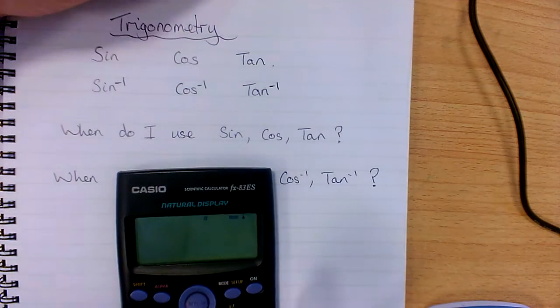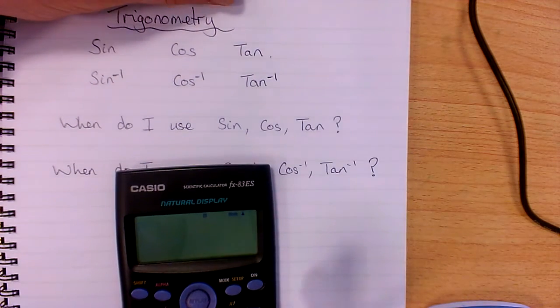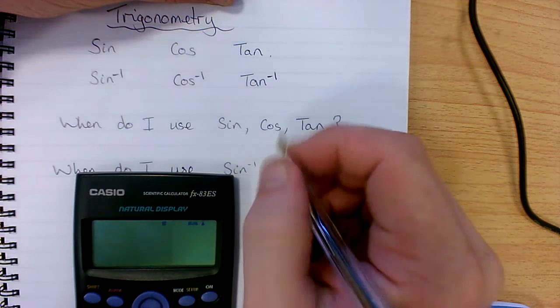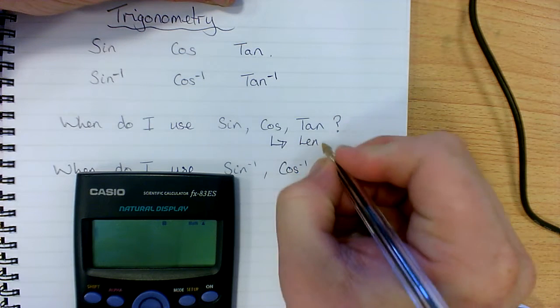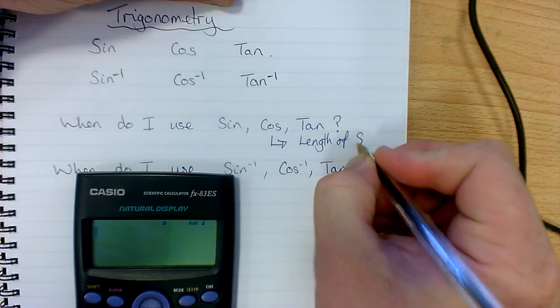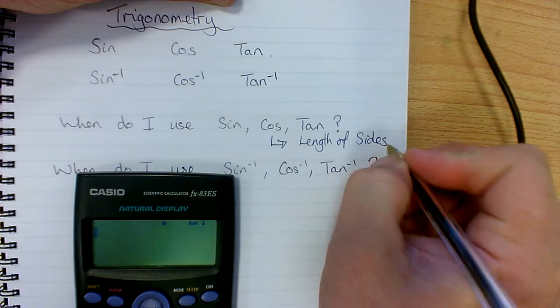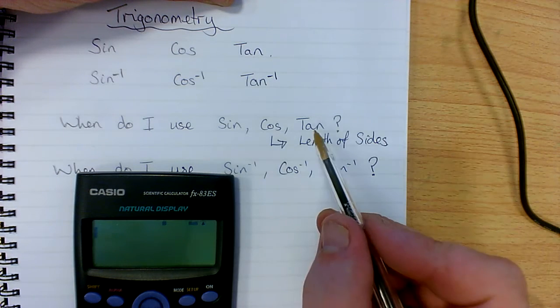So the key question is, when do I use sin, cos and tan? Sin, cos and tan are primarily when we're involved in looking at the length of sides. So if you're looking for a question to do with the length of a side, you will use sin, cos or tan.